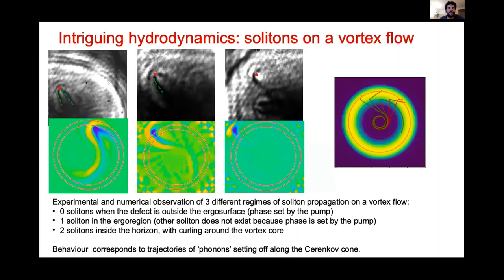Going closer to the experiment, I run a simulation of the Gross-Pitaevskii equation and create an animation from steady-state images, subtracting the background density for contrast. We see again the same behavior: close to the vortex core we have two solitons curling along the flow; further away we have only one soliton; very far out near the pump donut region, we have no soliton. The numerical simulation agrees with the experiment, and the soliton trajectories curling around the vortex core agree very well with our analytical trajectories.